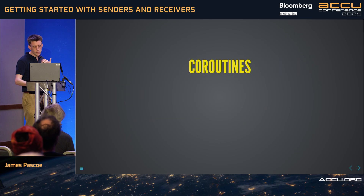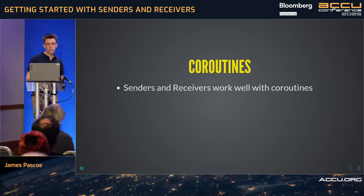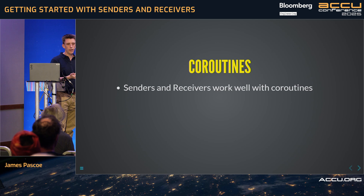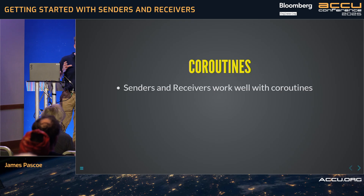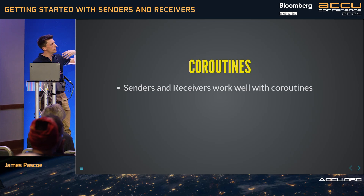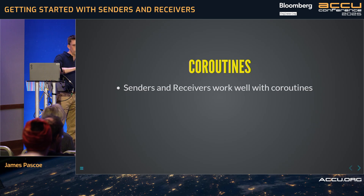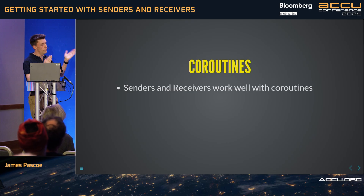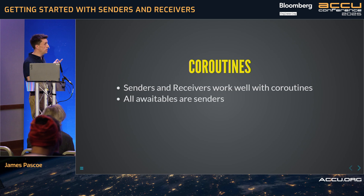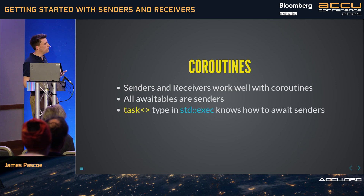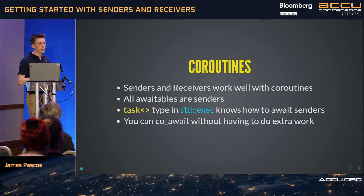Good news is that senders and receivers work quite well with coroutines. Early on, I think a lot of people started by looking at P2300 — the senders and receivers proposal — and took from that that senders and receivers were kind of a follow-on from coroutines. But they actually work very well together and complement each other. Coroutines are actually senders, which is a good thing. In std::exec we have a task type now, which means you can co_await senders with very little extra work.